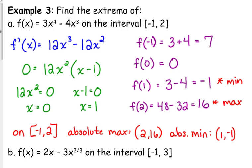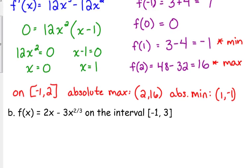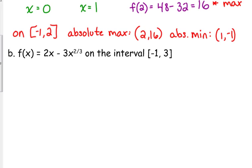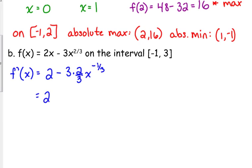Note that (0, 0) may be a relative minimum or relative maximum — we don't know without looking at the graph — but I'm not concerned about that right now, just the absolutes. Now let's look at example B: 2x minus 3x^(2/3) from negative 1 to positive 3. Let's begin by taking the derivative. We get 2 minus 3 times (2/3)x^(−1/3), which simplifies to 2 minus 2x^(−1/3).